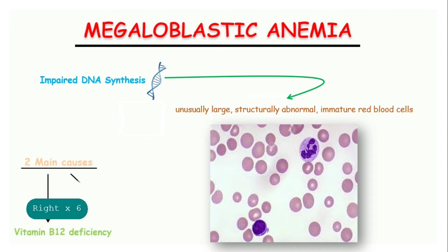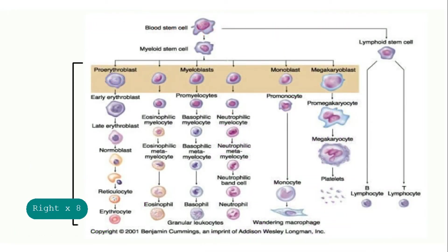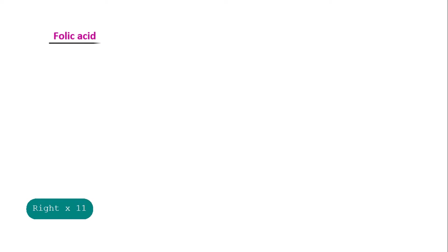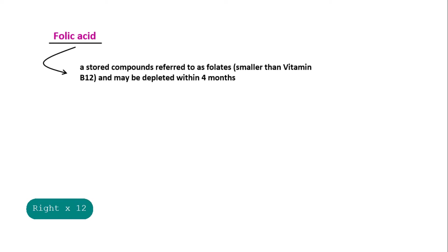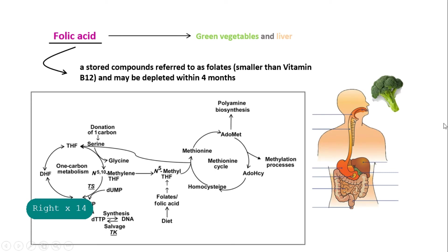Because the erythrocytes are very large, the MCV is very high. There are two main causes: vitamin B12 deficiency or folic acid deficiency. Vitamin B12 and folic acid are essential for normal DNA synthesis. Folic acid is stored as compounds referred to as folates. The folates stored in the body are much smaller than those of vitamin B12 and can become depleted within months when the dietary intake of folate is deficient. Folate is found in green vegetables and liver. We eat folate in the form of polyglutamate, which can be absorbed at the small intestine, particularly in the jejunum.